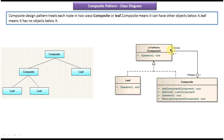On the right side you can see the class diagram of composite design pattern. You can see interface IComponent — it has an operation method. Since this is an interface, the operation method is abstract and does not have any implementation. The implementation of operation will be provided by the subclasses: composite and leaf.